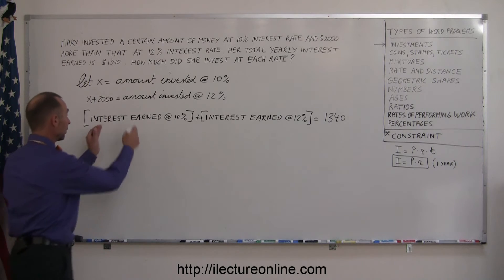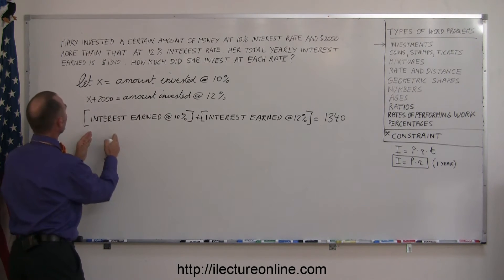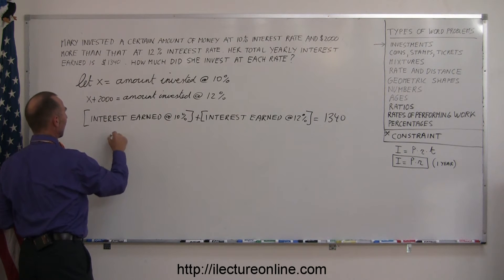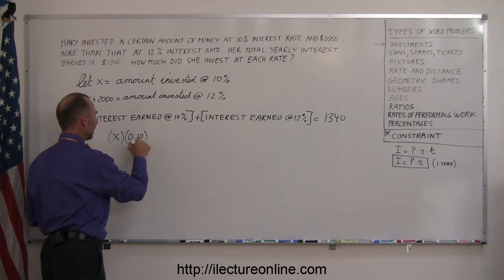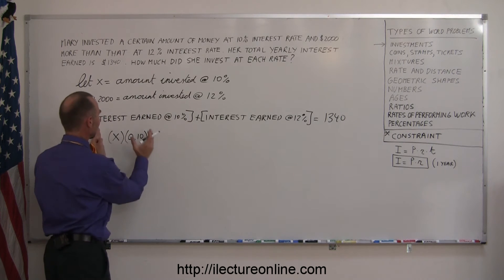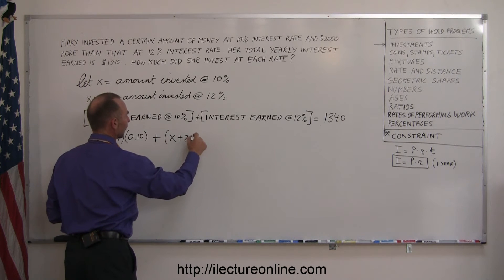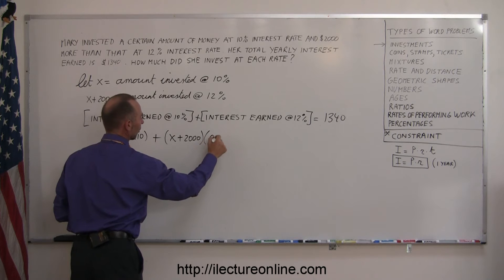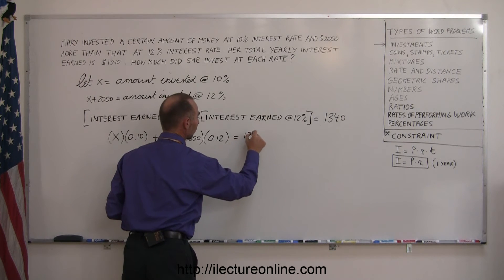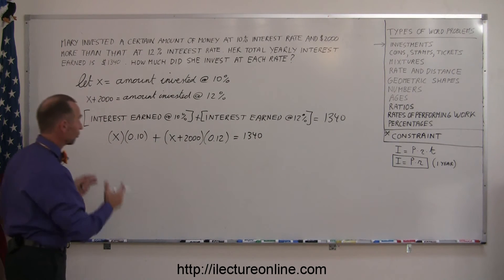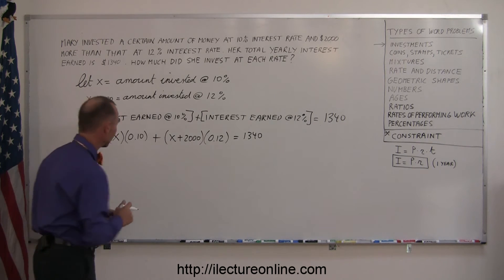We simply have to put in what these are. Just like we said, it's the principal times the rate. Since the principal at 10% is x, we write x times 10%, or 0.10 as the decimal equivalent. That's the interest earned at 10%. Plus x plus 2,000 is the amount invested at 12%, so we write 0.12. This is the interest earned at 12%, and that should add up to $1,340. Now you can see we have a simple linear equation to solve for x.